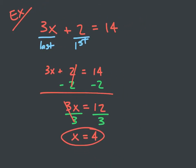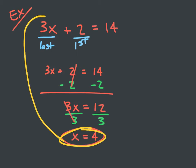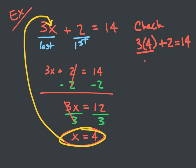You can check this by substituting x equals 4 back in to see if you get 14. Let's check: three times four plus two equals 14. By order of operations, multiply first — three times four is 12. Then 12 plus two equals 14, which equals 14. That's true, so x equals 4 is my solution.